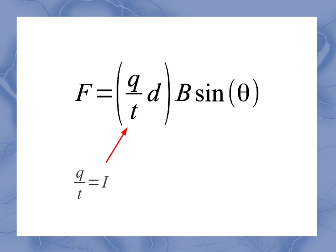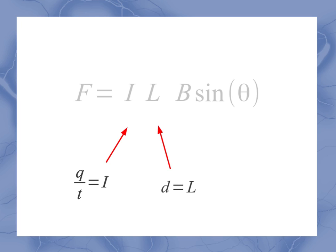And if I'm thinking about this in terms of a current moving down the wire, the distance it's going to travel, that's going to be the length of the wire. So I can actually substitute these quantities in, so that Q over T becomes I, and D becomes L. And I'm left with F equals I L B sine theta.